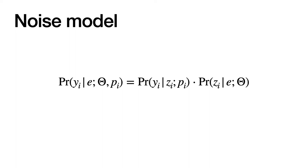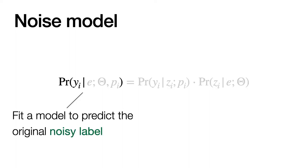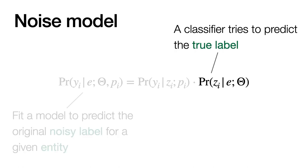First, let's talk about noise model. What we do here is to fit a model that predicts the original noisy label for a given entity. This model we fit has two components. The first one is an ordinary classifier that tries to predict the true label.